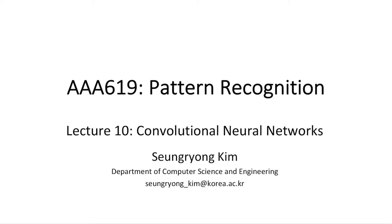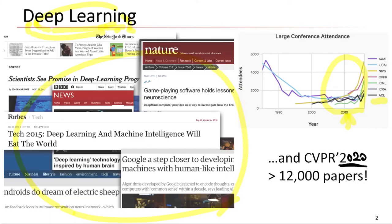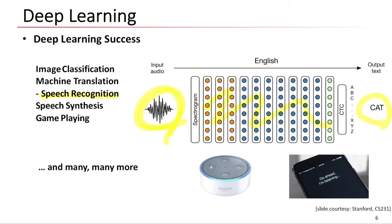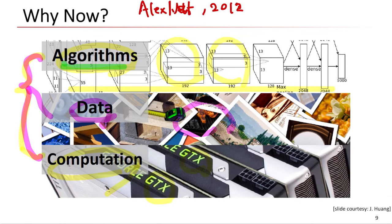Let's start. Today we are going to talk about the convolutional neural network. Before starting, let's recap last week's lecture, where we introduced deep learning and deep neural networks. Deep learning has seen success in many applications such as image classification, machine translation, speech recognition, speech synthesis, and game playing.